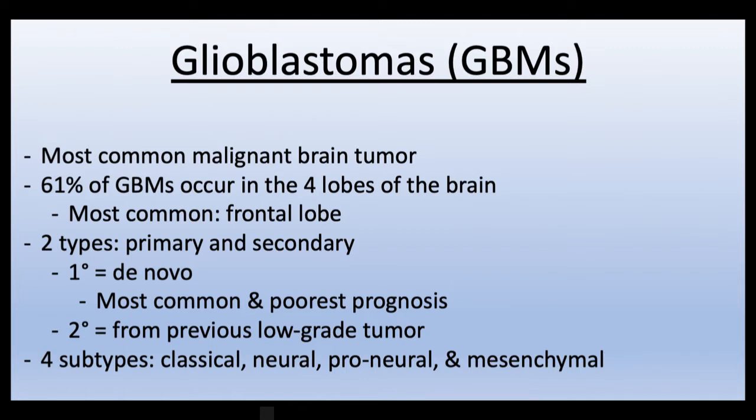Glioblastomas are typically classified into two types. The primary type arises de novo with no known precursor, but the secondary type arises due to transformation of a previously existing low-grade tumor. These tumors can be further categorized into four subtypes: classical, neural, proneural, and mesenchymal.